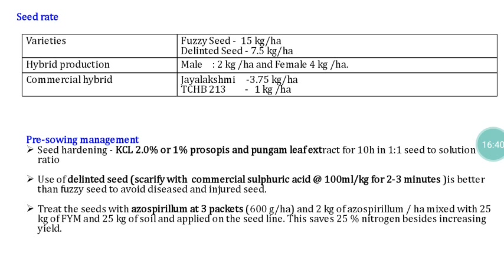The drawback of acid delinting is that we use acid, and the duration of acid treatment and the quantum of acid used are very critical. Excess acid or extended treatment beyond the optimum level can damage seed viability by corroding the seeds. Because of this, a technical person is needed to carry out this operation, and the person doing the operation must be very careful. Despite these drawbacks, acid delinting is an already proven technology followed by many farmers and most private companies.